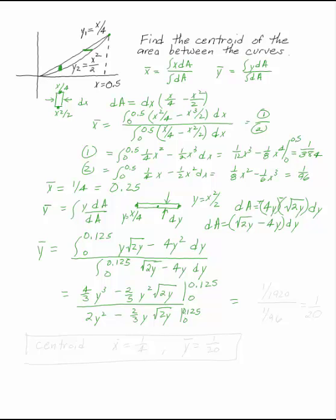That gives 1/1920 on top and 1/96 on the bottom, which equals 1/20. So the centroid of the area between these two curves is at x̄ = 1/4, ȳ = 1/20.